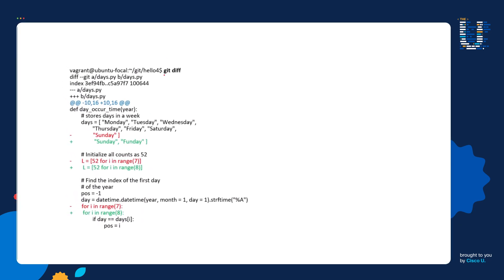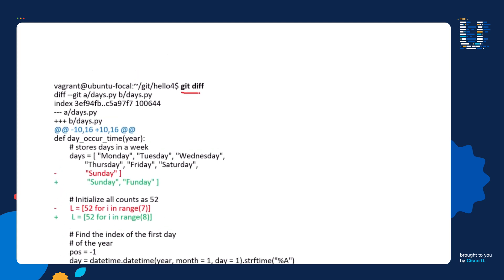So this is the command we're going to cover right here: git diff. The reason you're going to use a command like this is to compare two versions of the same file. In this example, I'm comparing a newer version of the days file with an older version of that same days file. Now, looking at the output of the git diff command can be overwhelming. We see all this text, numbers, plus signs, minus signs, stuff in red text, stuff in green text. So what I want to do is demystify this for you and teach you how to read this output.